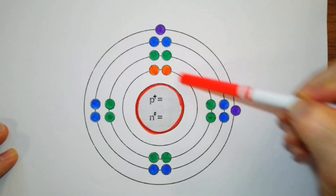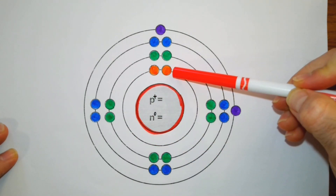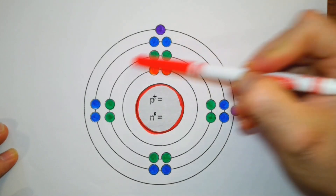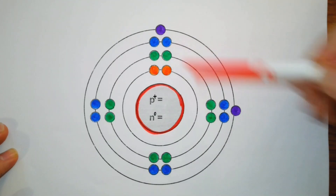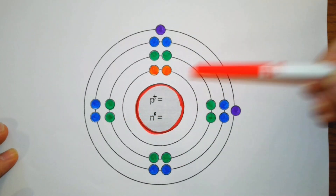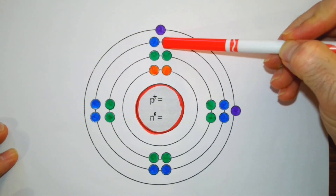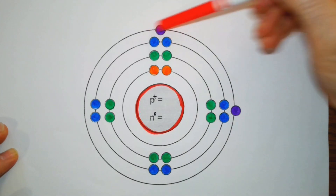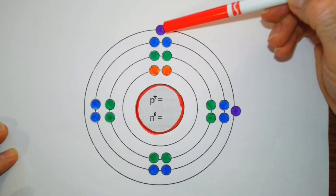In the very first orbit it can have a maximum of two electrons, indicated by these orange dots. The second orbital is going to have a maximum of eight electrons, represented by these green dots. The third orbital can also contain eight electrons. And the fourth orbital is going to hold up to two electrons.